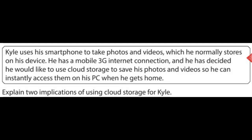In this section of the video we're going to go over an example question that might come up in your unit 1 IT systems exam. The question tells us that a user has photos and videos on his smartphone which he normally stores on his device, but he has an internet connection and has decided to store them on cloud storage software so he can access them on his PC instantly when he gets home. The question asks us to explain two implications of using cloud storage for the user. Key details to note are that he has a 3G mobile internet connection, that he wants instant access on his PC, and that it's cloud storage and not cloud computing.